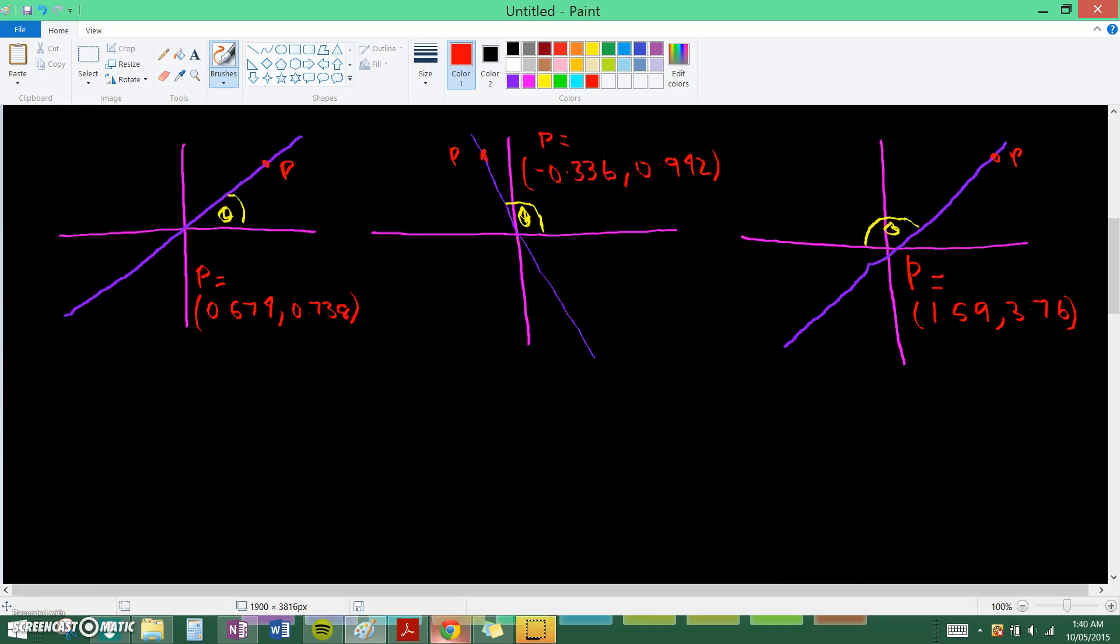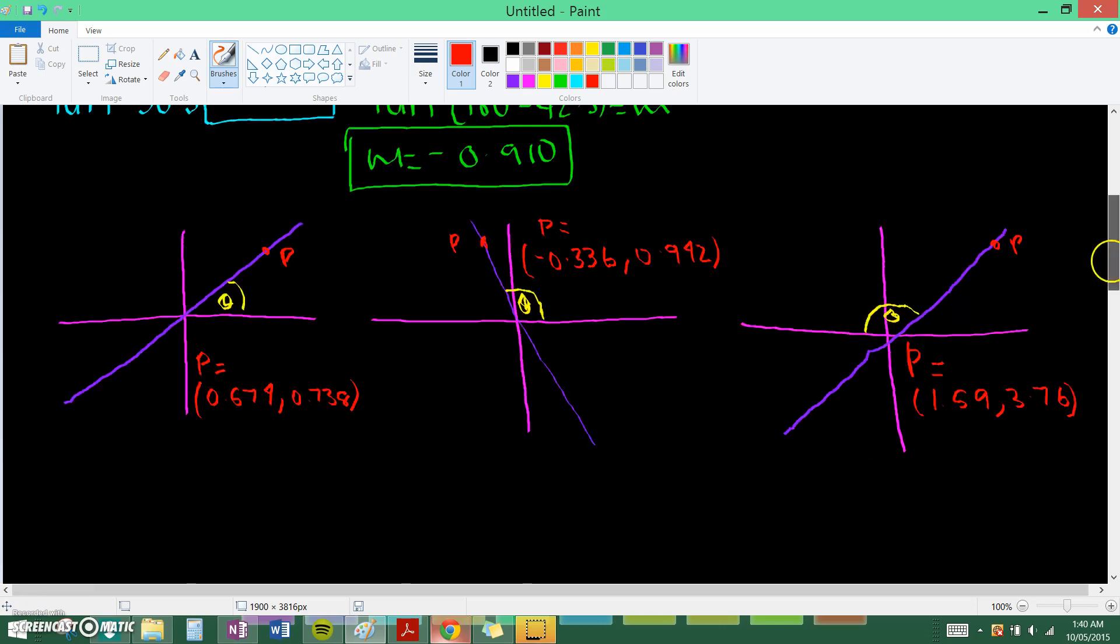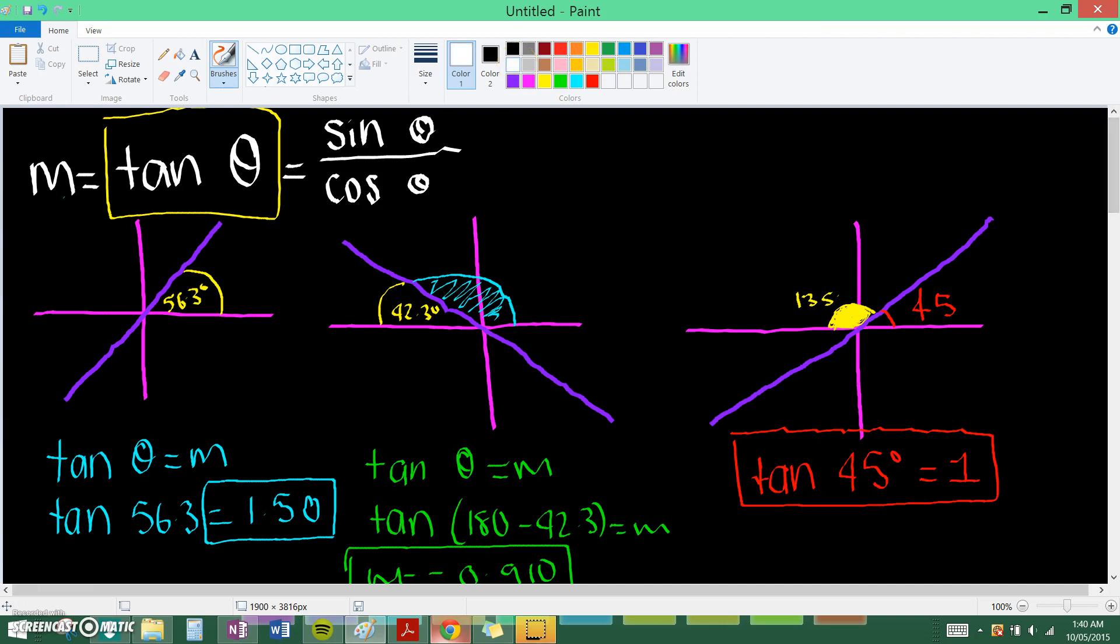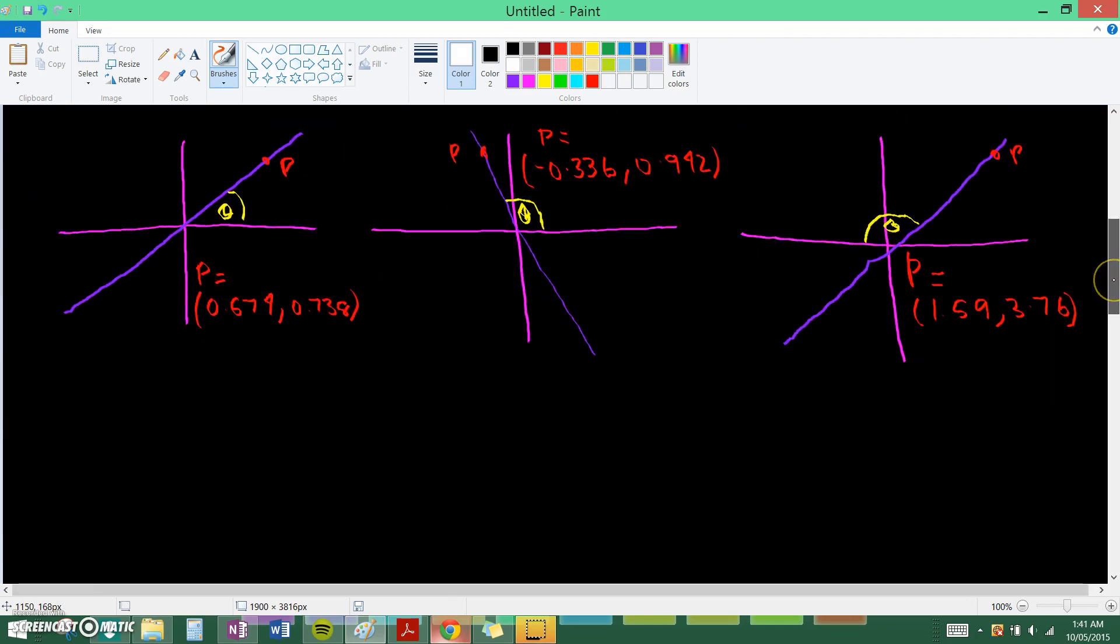Now let's do some questions where we actually have to figure out theta ourselves, given a coordinate. Now we know that the gradient of a line, just the general formula, is y2 minus y1 over x2 minus x1. So we can just use that to substitute it in. The x2, y2 coordinates will be p. And the x1, y1 will be the origin right here. So hopefully that makes sense to you.